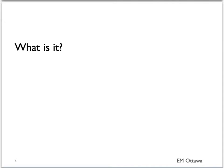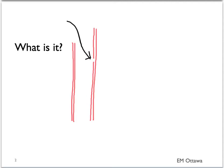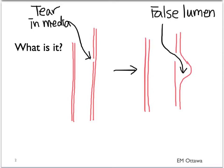What is aortic dissection? It occurs when there is a tear in the media of the aorta. The blood now creates a false lumen. The column of blood in the false lumen can keep dissecting further, or it can propagate backwards.